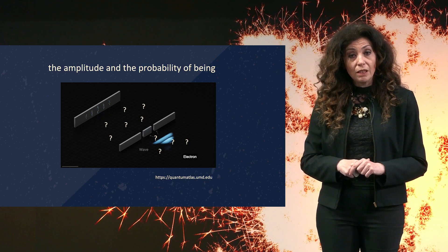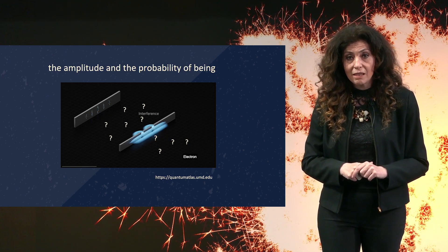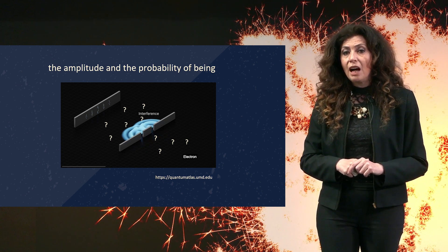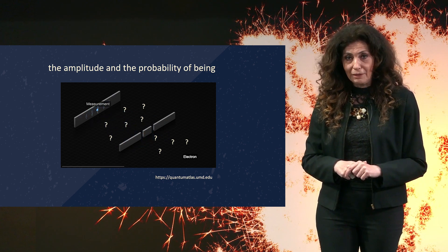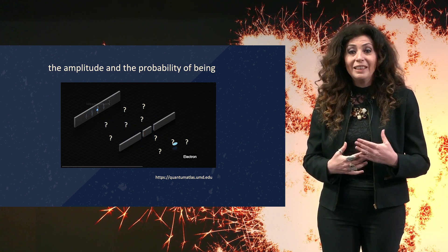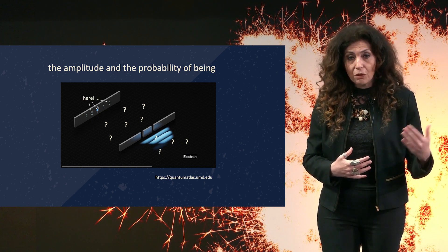What does it mean for a microscopic quantum particle like an electron to exist? To understand this, let's look at an animation showing the journey of single electrons produced at a source, encountering a first screen with two slits, and then arriving at a photographic plate, where they are absorbed.